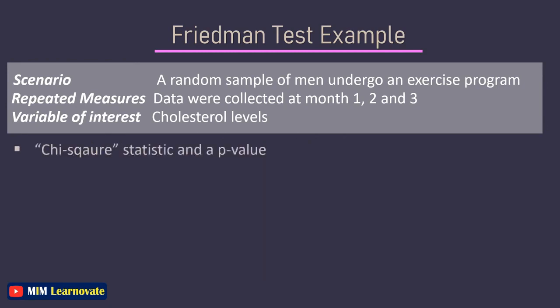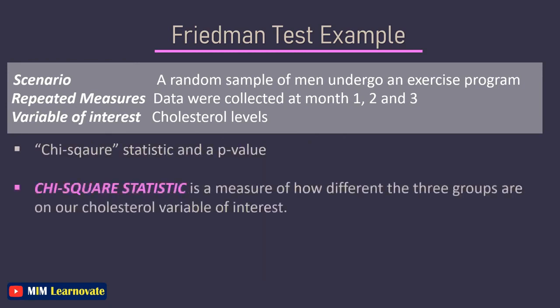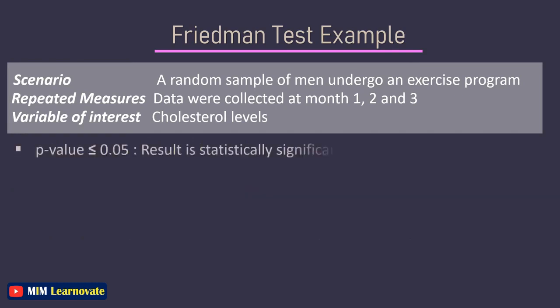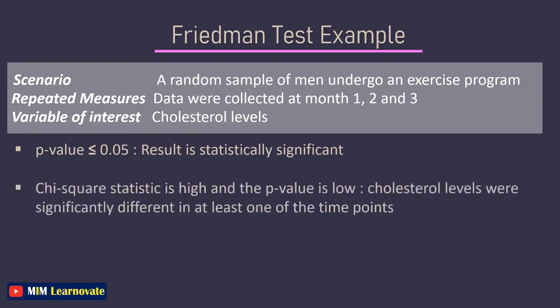When we run the analysis, we get a chi-square statistic and a p-value. The chi-square statistic is a measure of how different the 3 groups are on our cholesterol variable of interest. A p-value is the chance of seeing our results assuming the exercise program has no effect on cholesterol levels. A p-value less than or equal to 0.05 means our result is statistically significant. If the chi-square statistic is high and the p-value is low, it means cholesterol levels were significantly different in at least one of the time points, and further investigation is required to determine which groups were significantly higher or lower than the others.